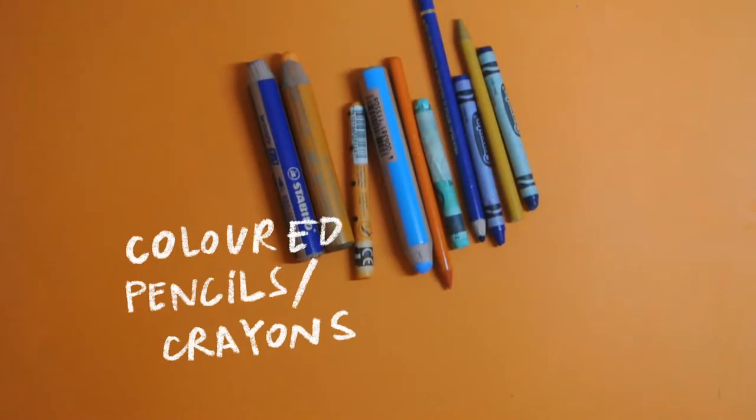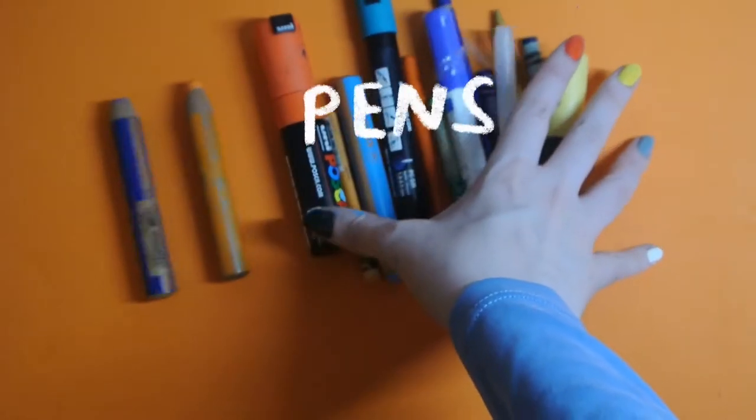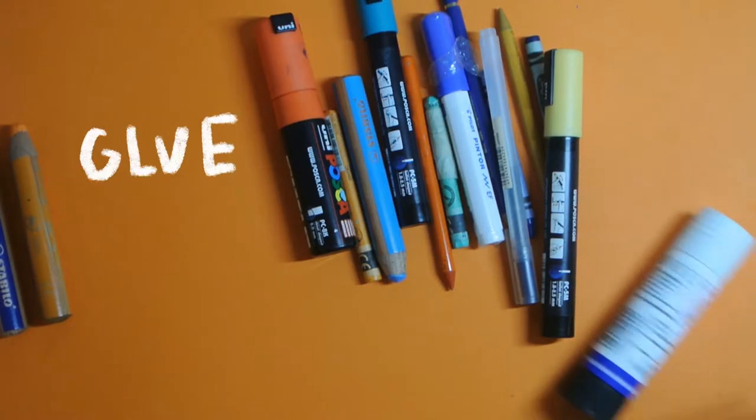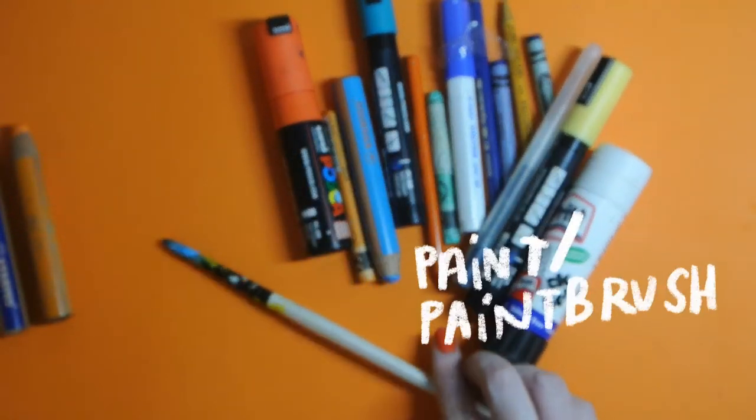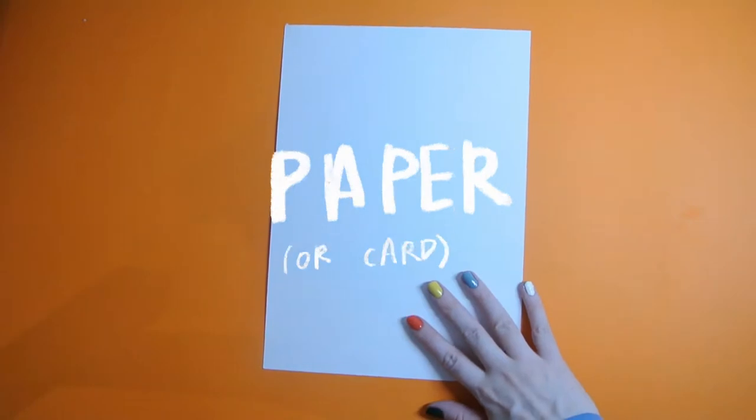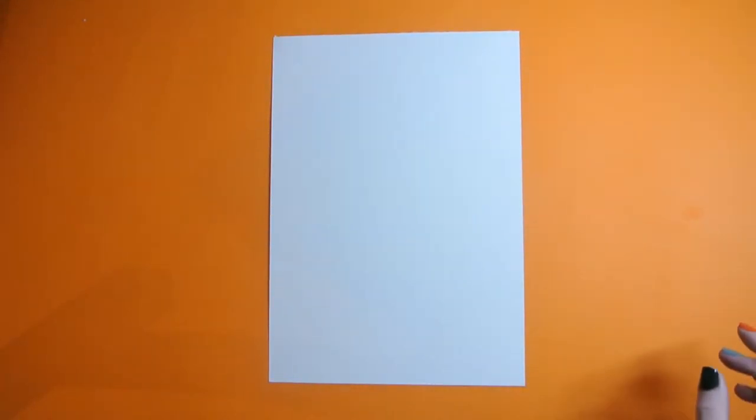So first things, grab your tools. We'll use coloured pencils and crayons, pens. You'll need a glue stick and I also use some paint, but whatever you've got at home we can use and make work. You'll need some paper, it doesn't have to be white, it could be blue if you want.